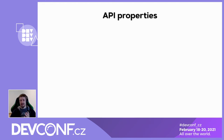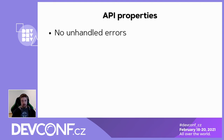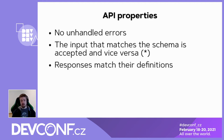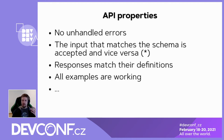Getting back to the API testing topic — there are a lot of properties we can use for property-based testing. For example, we expect that our API won't crash, there will be no unhandled errors. In the general case, we expect that valid input should match the schema and be accepted, and errors should be rejected. Then we expect that a response is matched with their definitions, and all examples are working. There could be much more of them, including expected response time or authorization on certain endpoints.